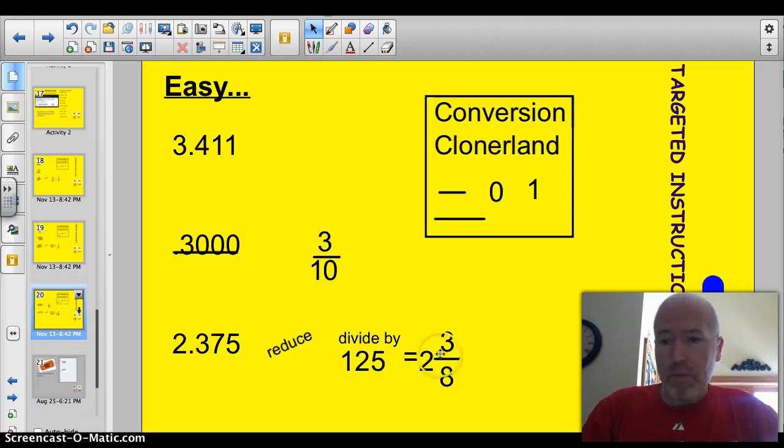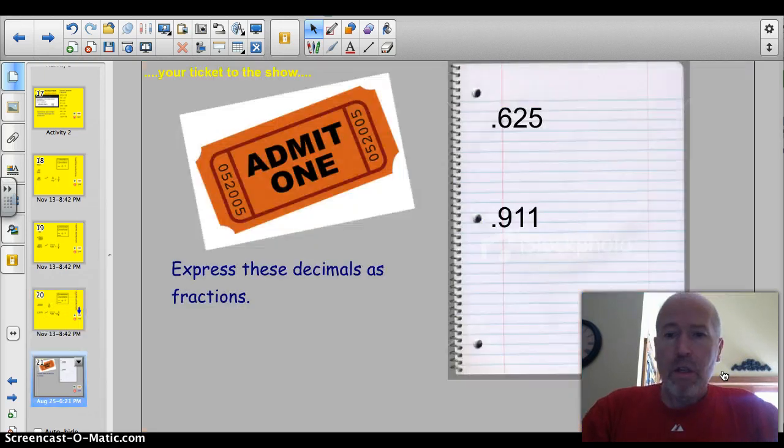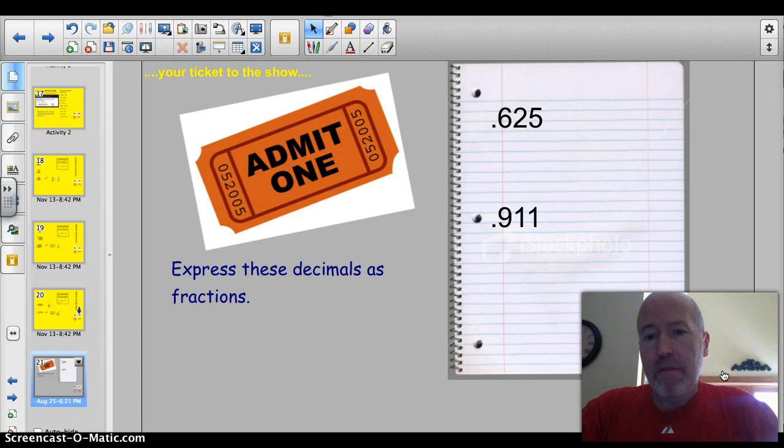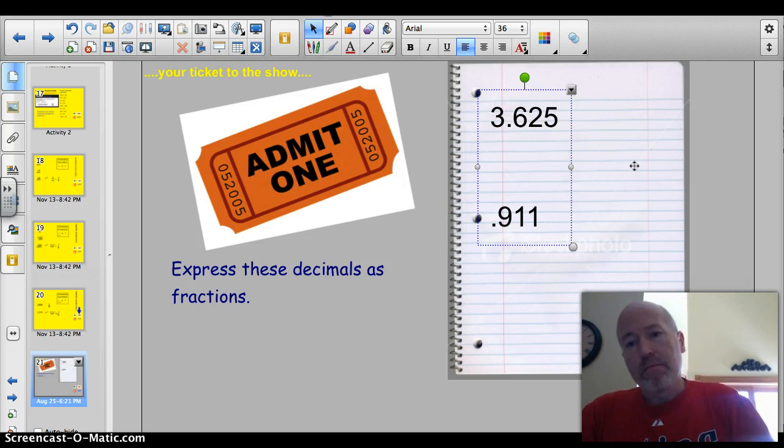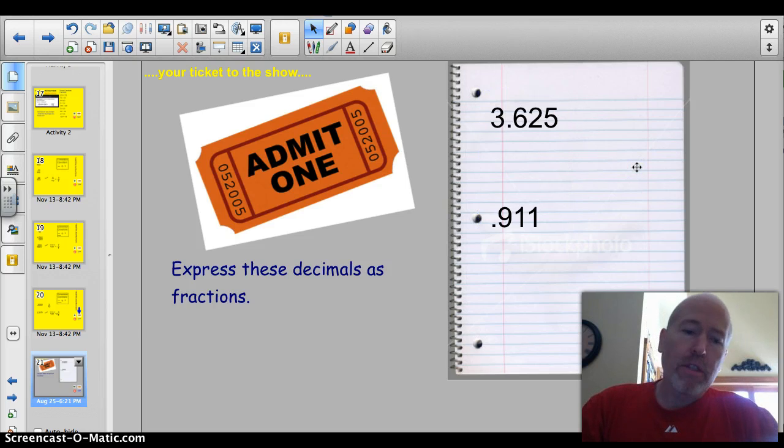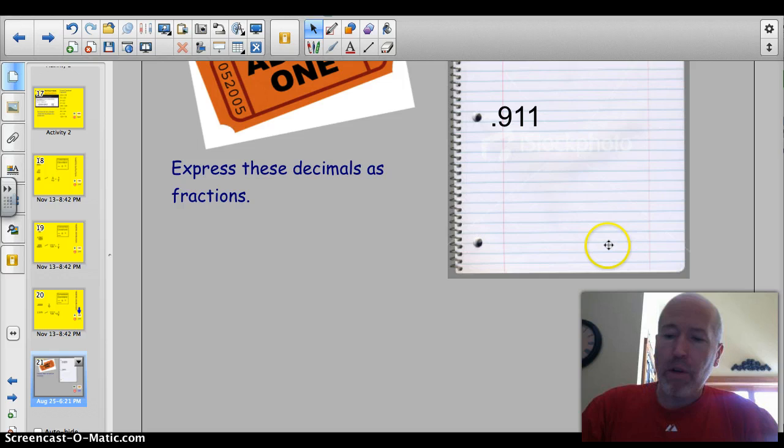Time for the ticket to the show. 0.625 and 911. Let's get a little crazy here and put a whole number in front of that. Make it 3 and 600, 3.625 and 0.911. If you take and change those into fractions, that would be lovely. Let's get to the trivia question.